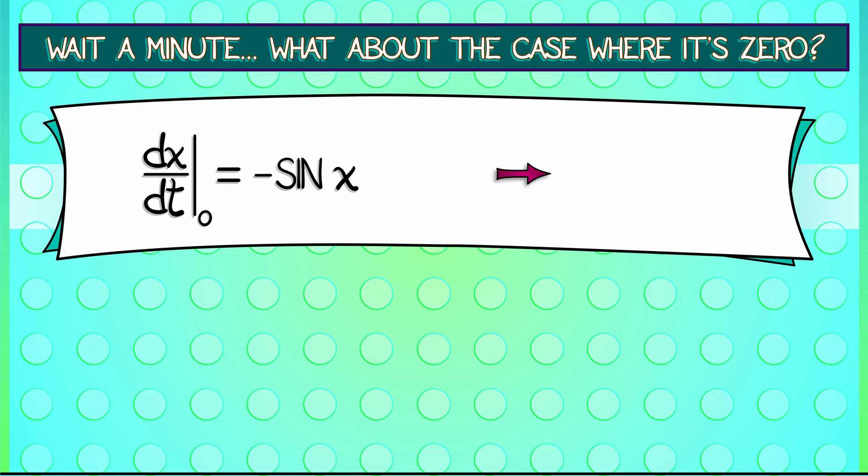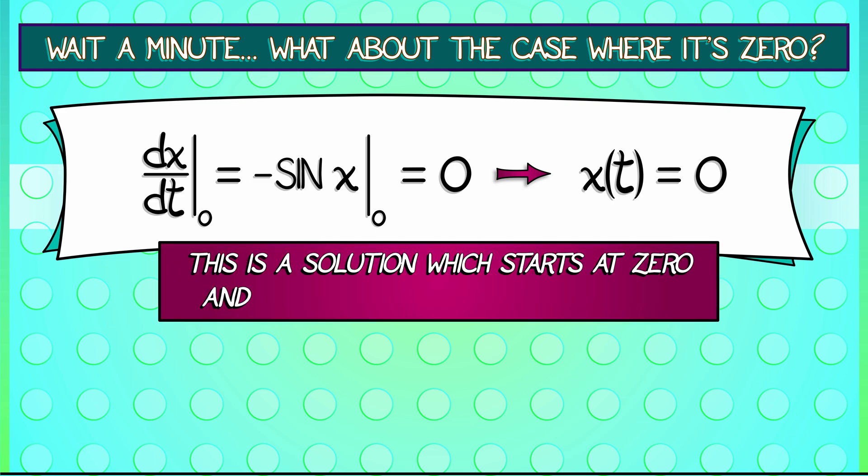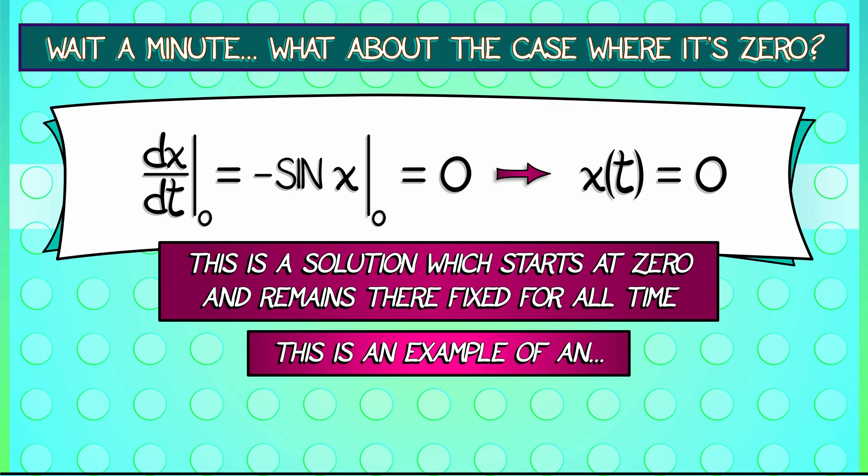It is minus sine of x. Plug in x equals zero. Sine of zero is zero. That's it. x of t is zero. And if you start there, the derivative is zero, so you've got to stay there. This is very interesting. We now have one explicit solution to the equation by thinking through things qualitatively. This is a solution. It starts at zero. It remains there fixed for all time. It's not a very interesting solution. But it's a very important solution. This is an example of a type of solution we're going to look at a little bit later called an equilibrium.